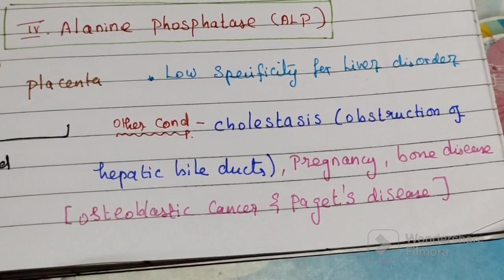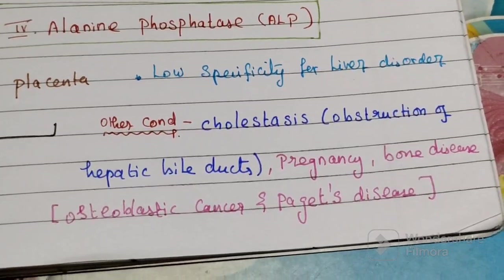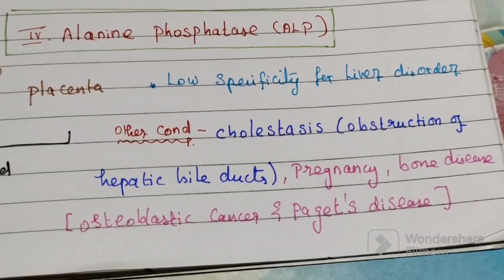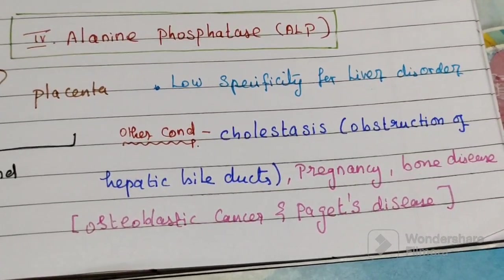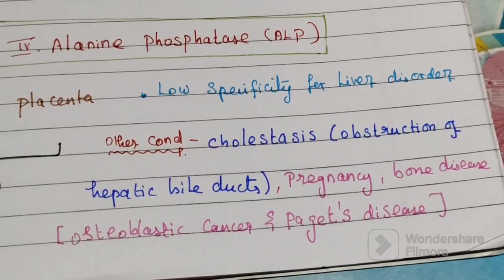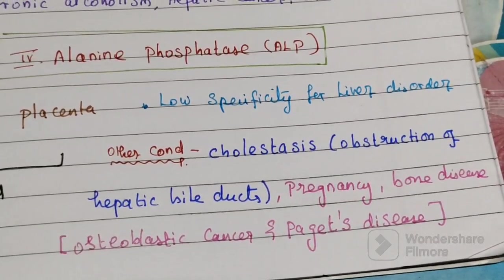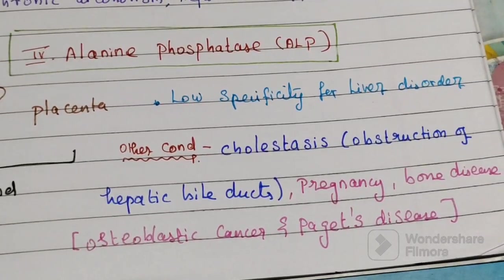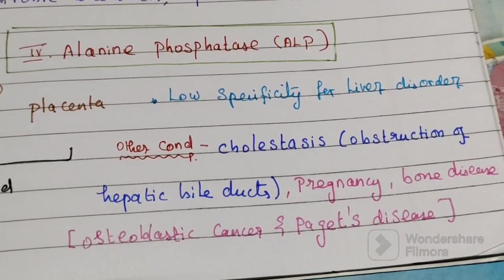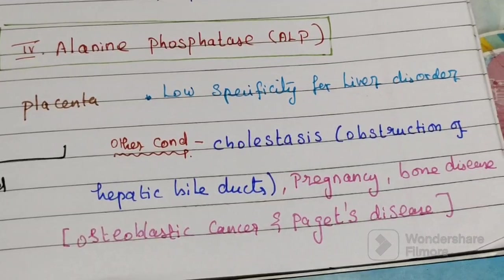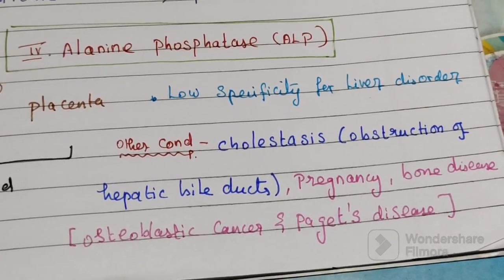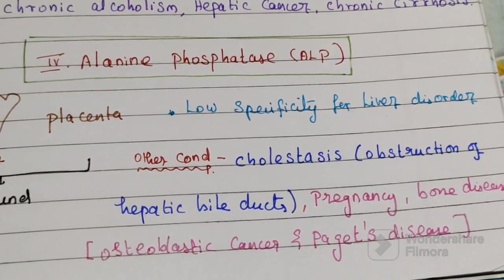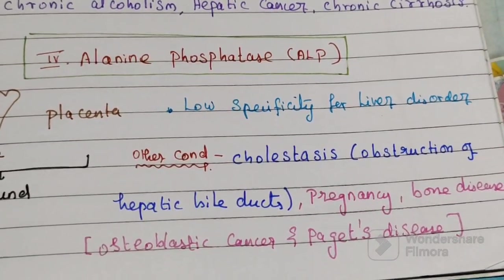New bone growth can also cause elevation in ALP level. So conditions that increase ALP include cholestasis, obstruction of hepatic bile ducts, pregnancy, and bone diseases like osteoblastic cancer and Paget's disease, as well as new bone growth.